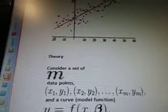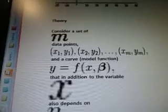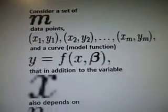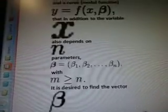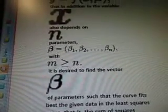So this is a theory. Consider a set of M data points, which are these, and a curved model function that, in addition to the variable X, also depends on N parameters. B equals B1, B2, up to BN with M, I don't know what that symbol means.